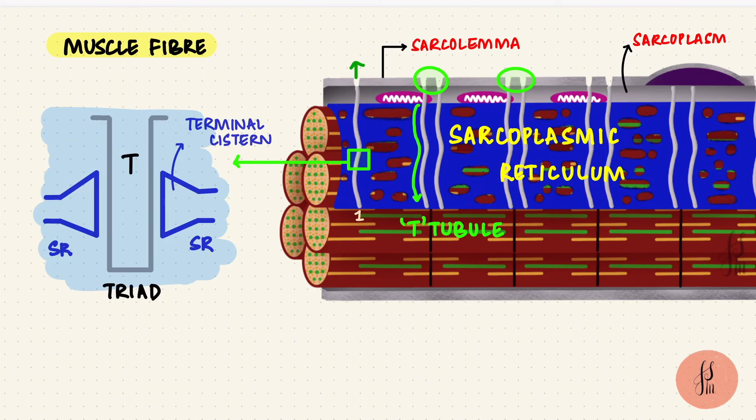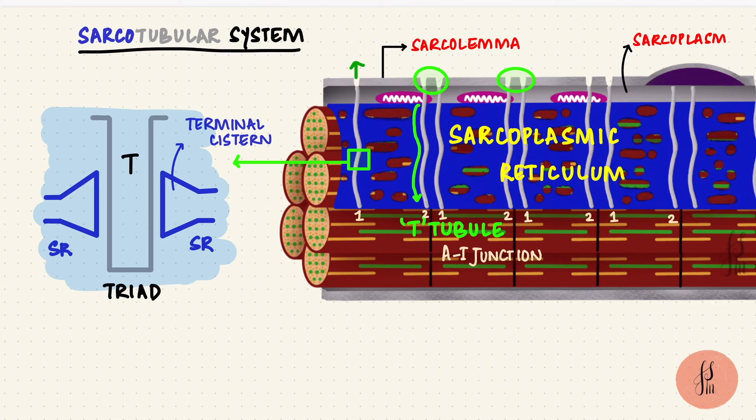In the skeletal muscle of mammals, there are two T-tubules for every sarcomere, one at every junction between an A-band and an I-band. This is the sarcotubular system, and it's important for understanding excitation-contraction coupling.